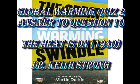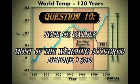Welcome. This video deals with the answer to question 10 of my second quiz on global warming. It deals with the question: when has most of the global warming occurred? Here's the original question. Question 10: true or false? Most of the rising global temperatures occurred before 1940.